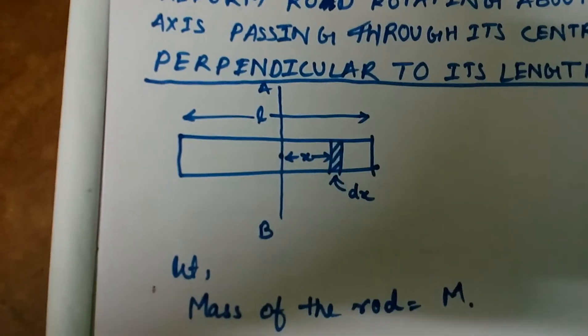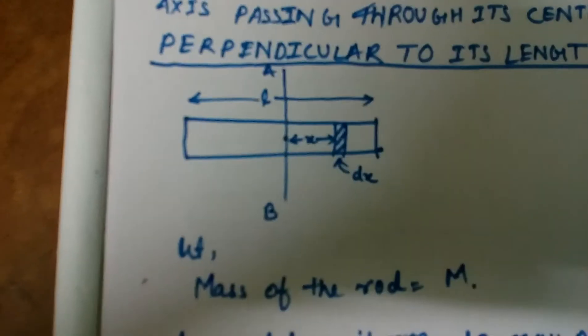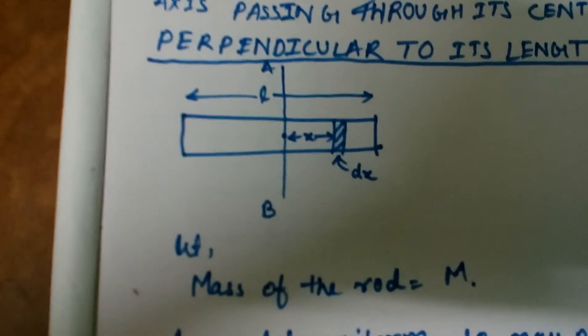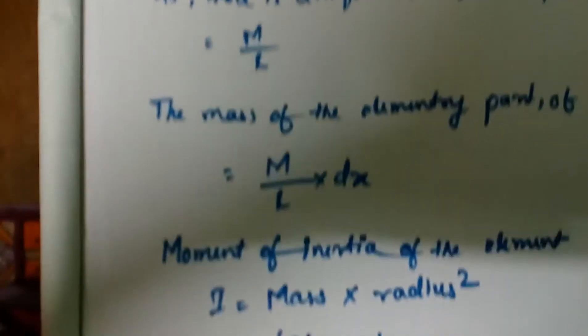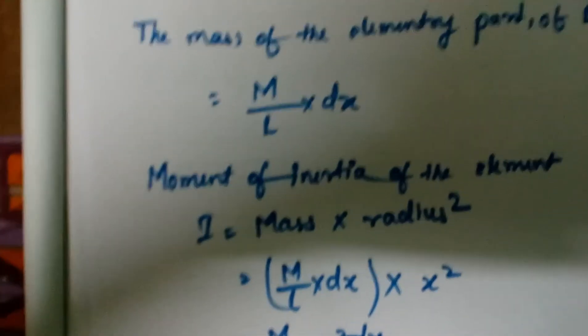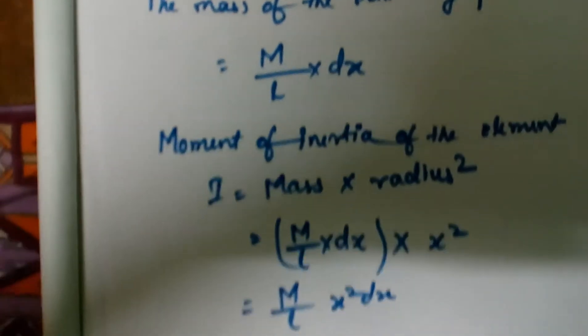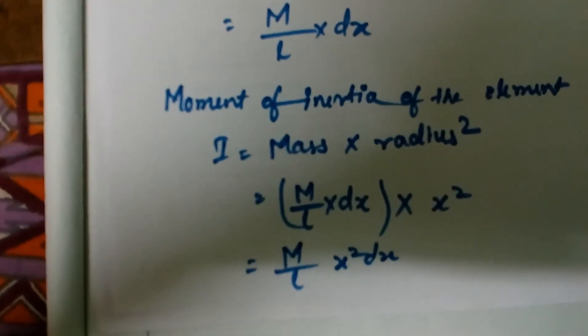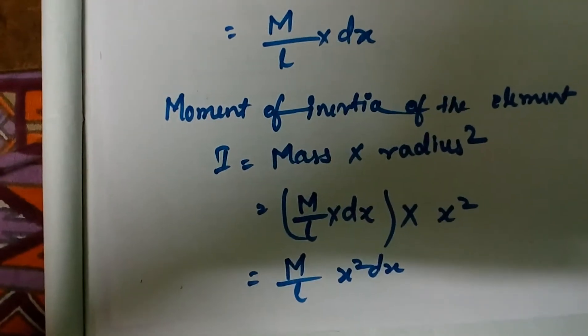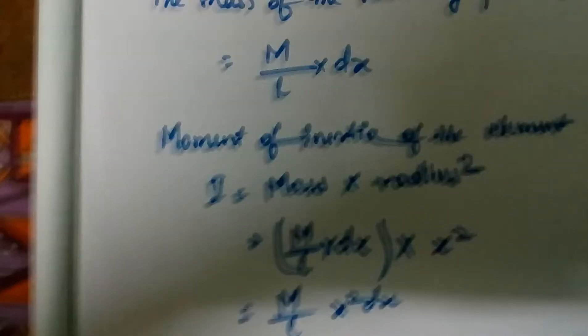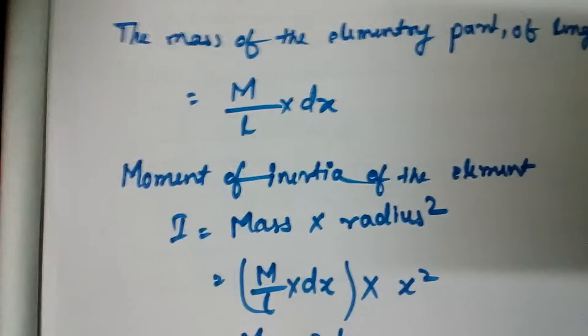So, what we have is M by L times dx times x squared. The radius of the elementary portion, that is the distance of the elementary portion from the axis of rotation, is x. So, we put the value of radius as x squared. Mass will be M by L times dx. And so, we get M by L, x squared dx. Now, coming to the next step.